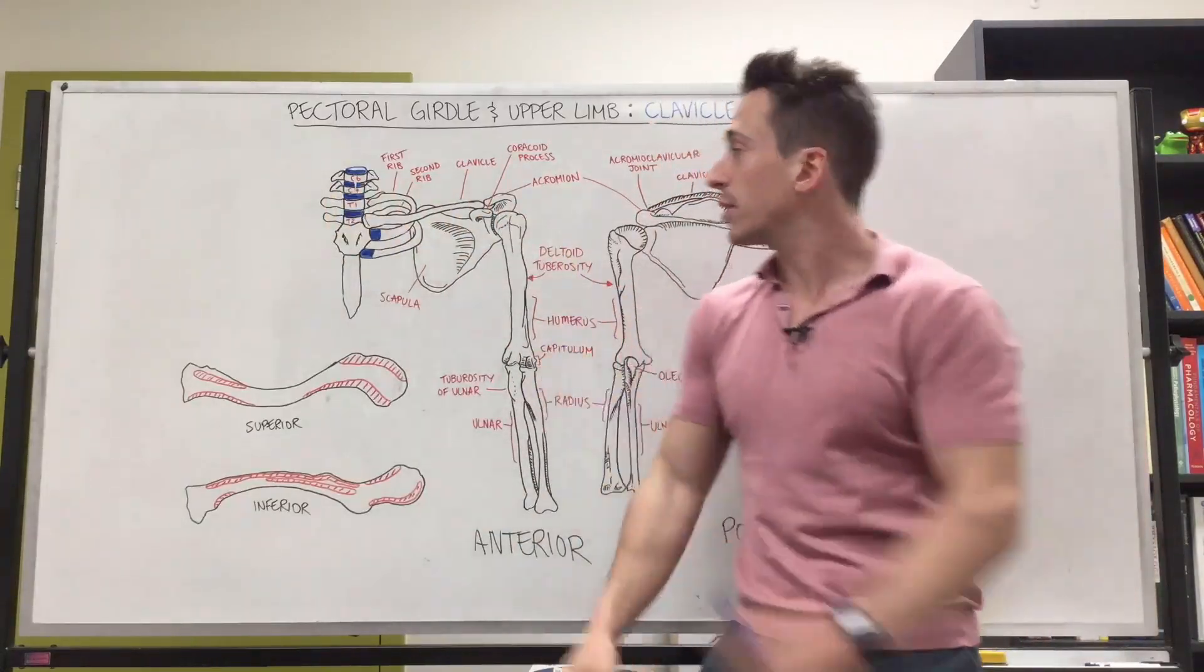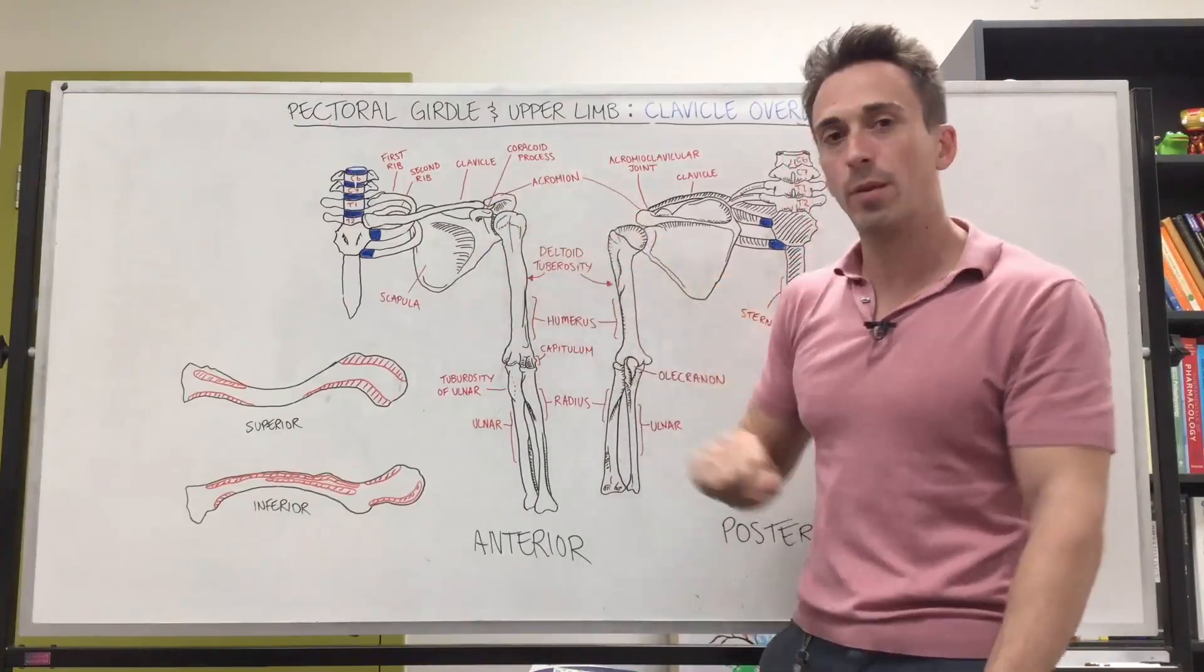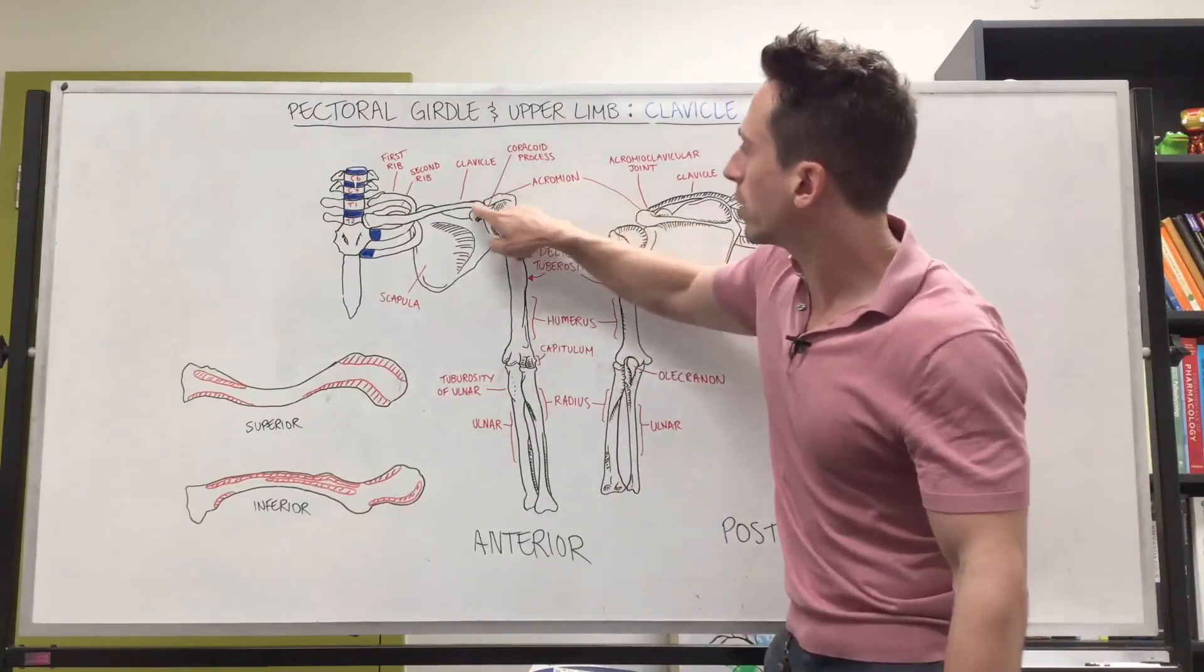Laterally, towards the side, you can see that the clavicle articulates with a part of the scapula called the acromion, and that's called the acromioclavicular joint.